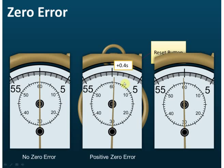Let's see another example. If the pointer points slightly before the zero mark, this is a negative zero error. Each scale division shows 0.2 seconds, so the zero error is −0.2 seconds. When writing zero error, always include the positive or negative sign. That's what you need to know about zero error.